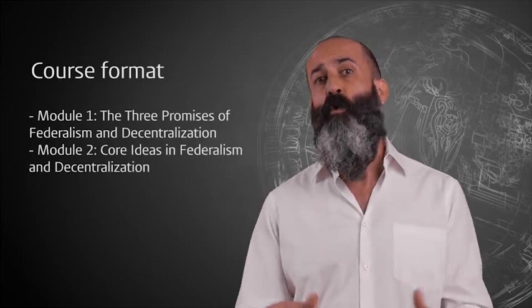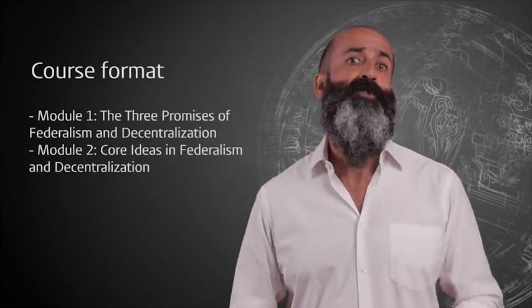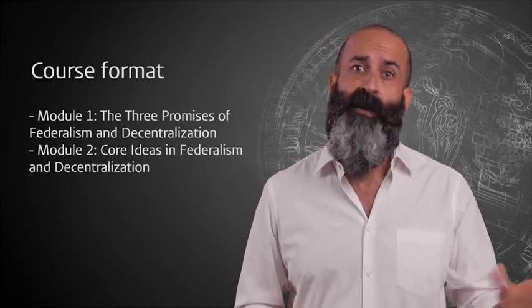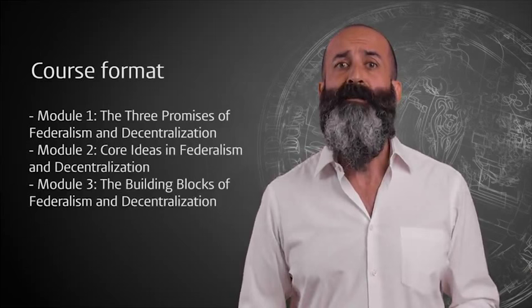Module two looks at the core ideas in Federalism and Decentralization. In particular, the combination of self-rule and shared rule, the distribution of political power between orders of government, and the presence of multiple identities that allows individuals to identify with both the central and the regional levels of government.